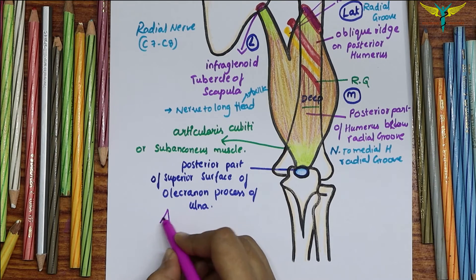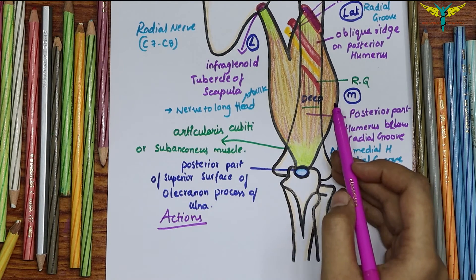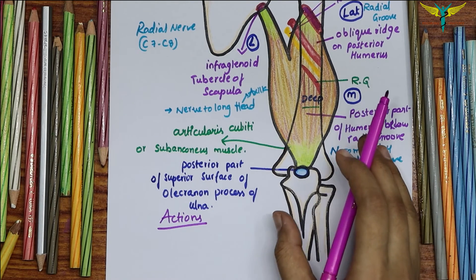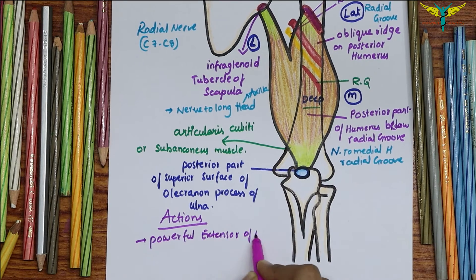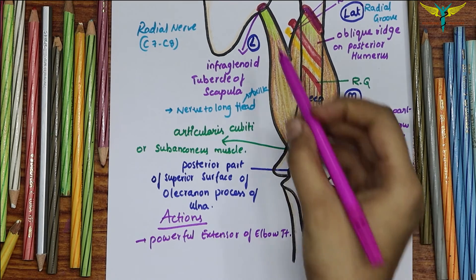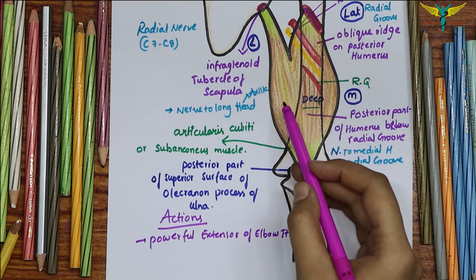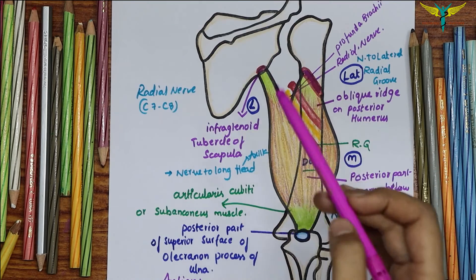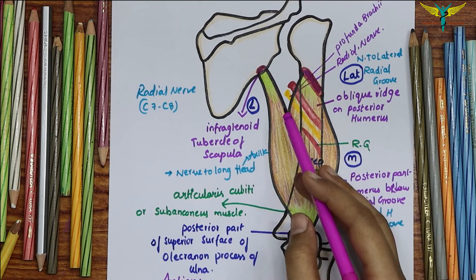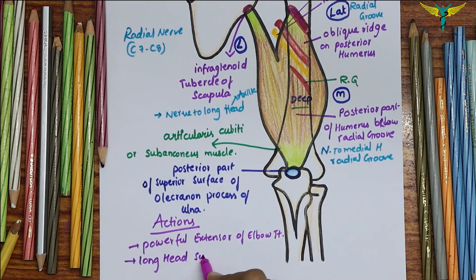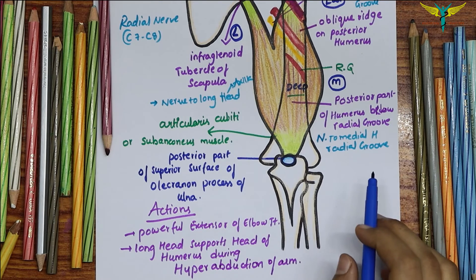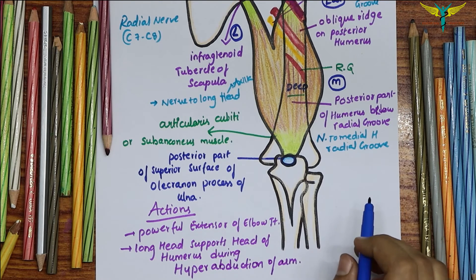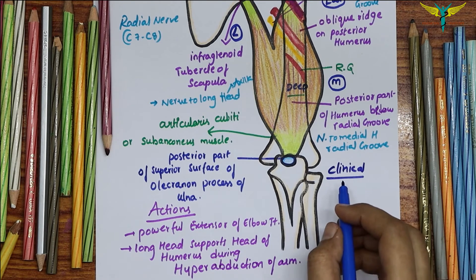In terms of actions, the triceps brachii is a powerful extensor of the elbow joint. The long head also supports the head of the humerus during hyperabduction of the arm.